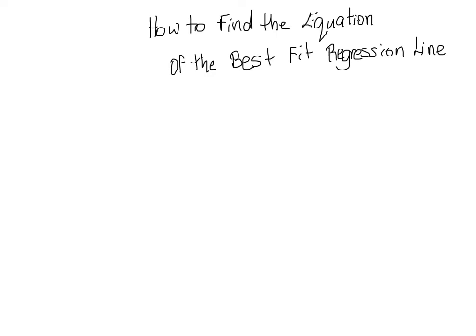In this video, we're going to look at how to find the equation of the best fit regression line using an actual formula. We're not going to focus on the TI-84 or Excel. We actually want to show that we know the steps to figure out this equation. The formula we're going to use is: y minus the average of y equals sxy over sx squared, times x minus the average of x.